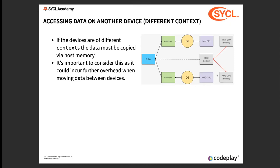Question from the audience: can the Intel GPU send data directly to the AMD GPU by specifying the same context for both devices? So as we saw, contexts are per platform. You can create contexts only per platform. The real question is: can the Intel GPU and the AMD GPU be on the same platform? And most of the time, no — they are not on the same platform.